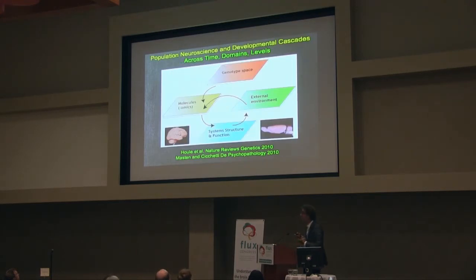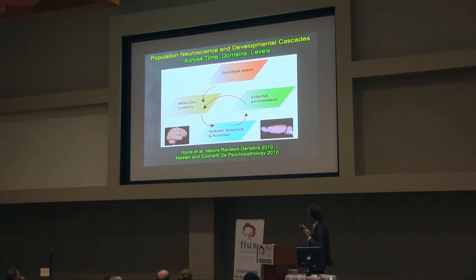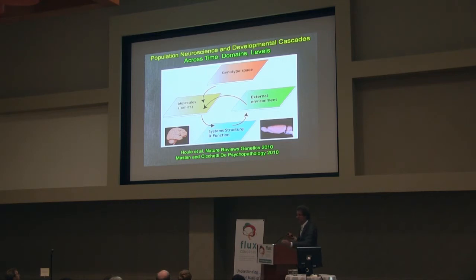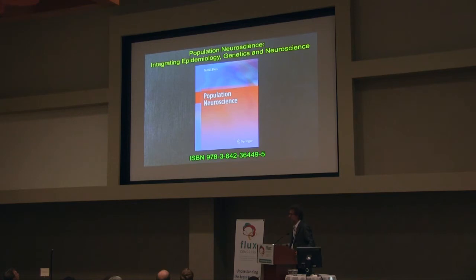I'll close by saying that what we have been hearing today, and the way I think about development, is really in the context of developmental cascades — as Masten has described them — cascades happening over time and across domains and levels. It's very important to keep in mind that none of those relationships are unidirectional; it all goes in a circle or both ways. I'll stop here by thanking my collaborators, and since I couldn't tell you everything, you can read more in the book I wrote last year.